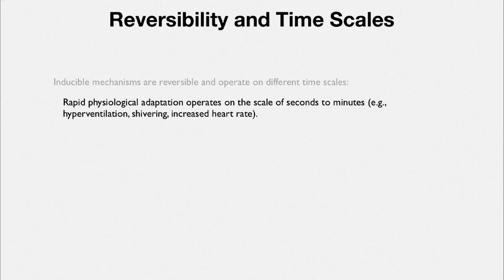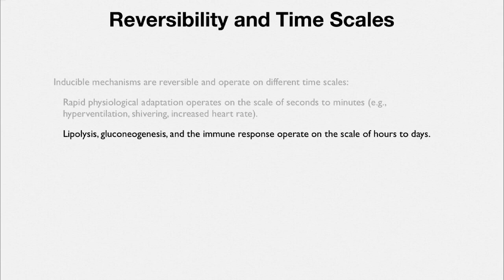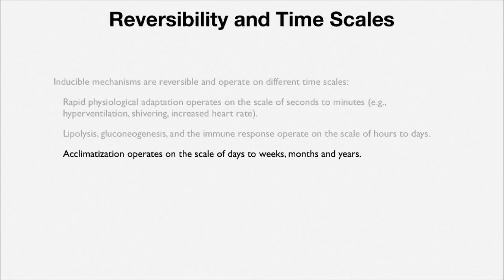Inducible mechanisms are reversible. Rapid physiological adaptation can happen in seconds to minutes — hyperventilation, shivering, increased heart rate can switch on very quickly. Lipolysis, gluconeogenesis, and the immune response operate on a scale of hours to days; it usually takes about three days for the adaptive immune response to recruit an effective cell population. Acclimatization operates on the scale of days, weeks, months, and even years.